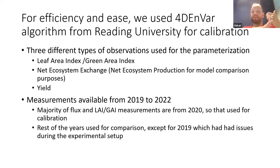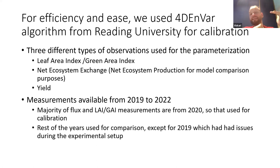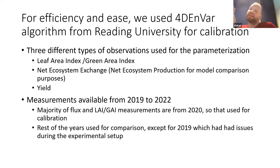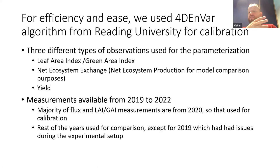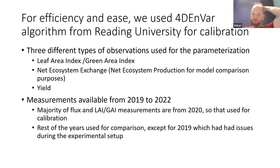We had three different kinds of observations: leaf area index or green area index — I'll explain the difference soon — net ecosystem exchange (here we use net ecosystem production, but that's the same thing, just a different sign, positive where NEE is negative), and then yield — what's the harvest. What people are really interested in is the net ecosystem exchange and yield, because no farmer is going to ask how green is my field. The active measurements ran from 2019 to 2022, with some soil measurements continuing into 2023. But the majority of observations from the field study are from 2020, so we used that for the calibration. The results I'm going to show here are from 2020 for reasons I'm about to explain.